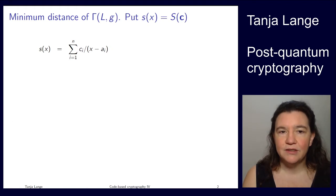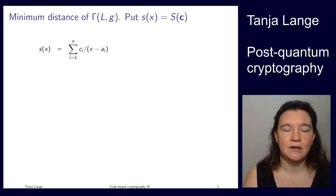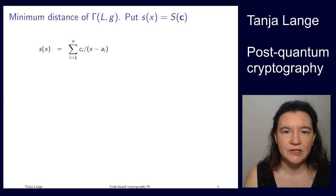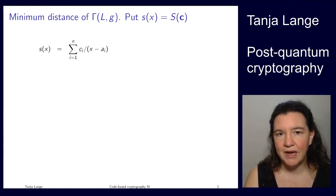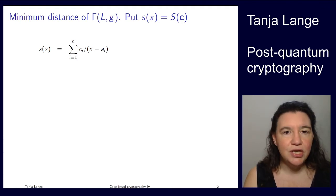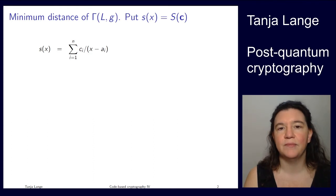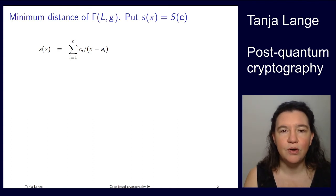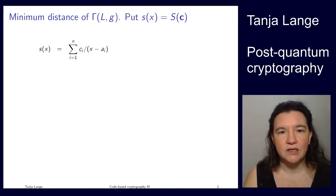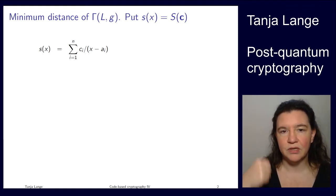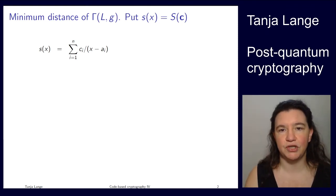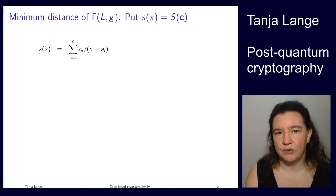Alright. So, as a short reminder, the Goppa code Gamma of L, G — L was the support, it was n elements of F2 to the m. And G is the Goppa polynomial, which is some square-free polynomial over F2 to the m, such that none of the elements of the support is a root of G. And typically, we pick G to be irreducible.